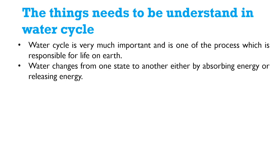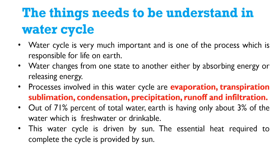The water cycle is very important and is one of the processes responsible for life on Earth. Water changes from one state to another, either by absorbing energy or releasing energy. The processes involved in the water cycle are: evaporation, transpiration, sublimation, condensation, precipitation, runoff, and infiltration. Out of 71% of total water, Earth has only about 3% fresh water, which is drinkable.